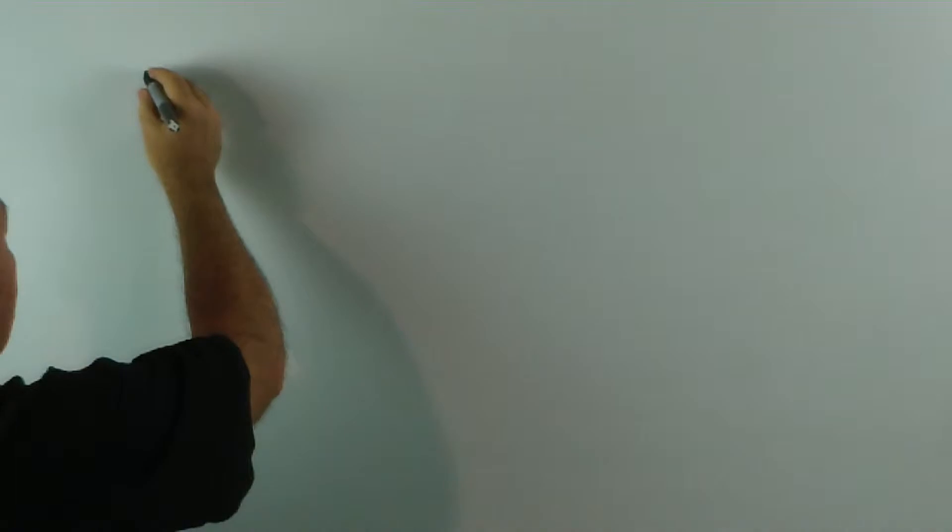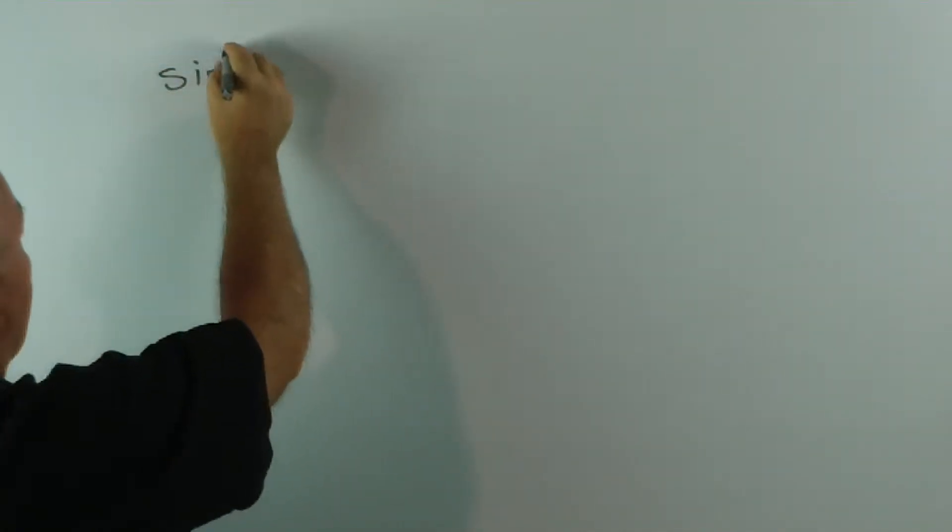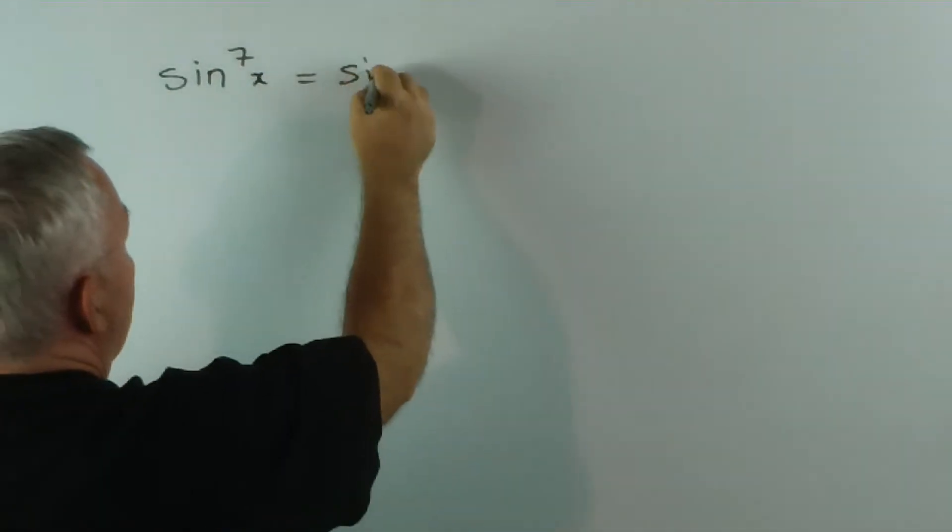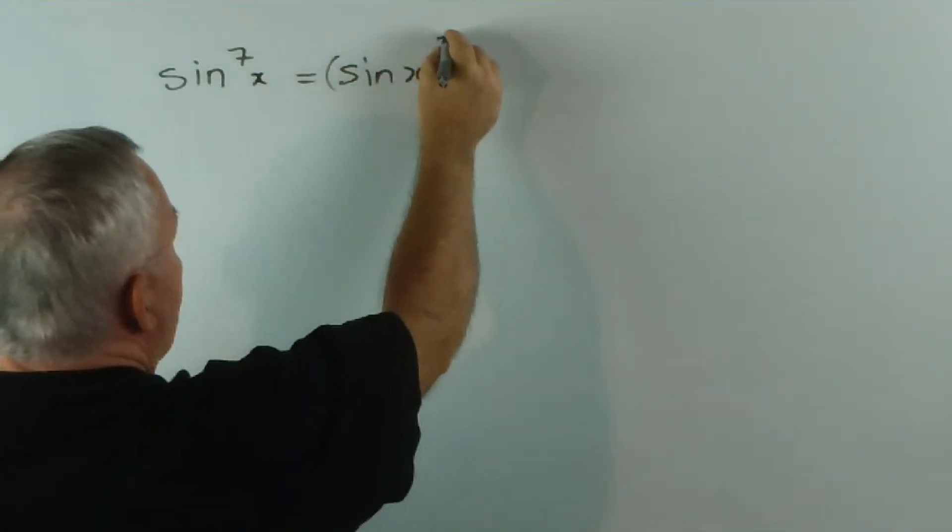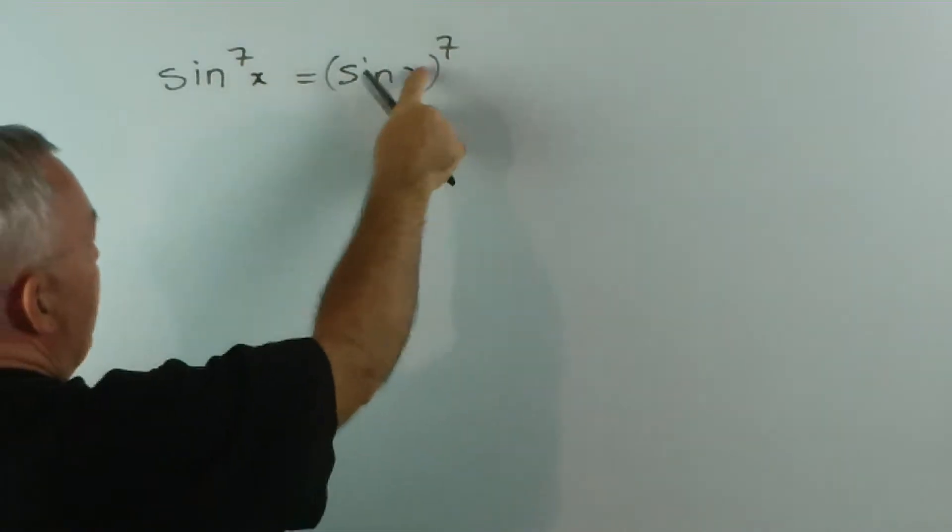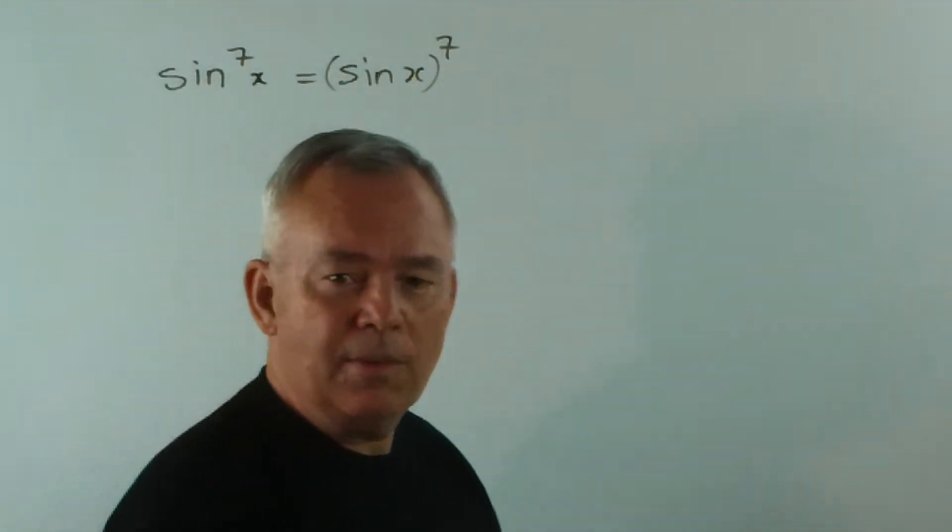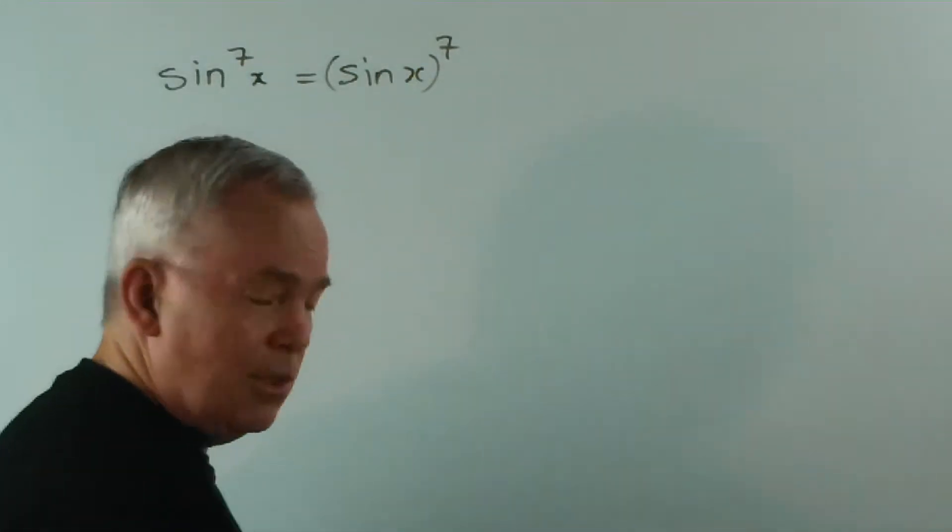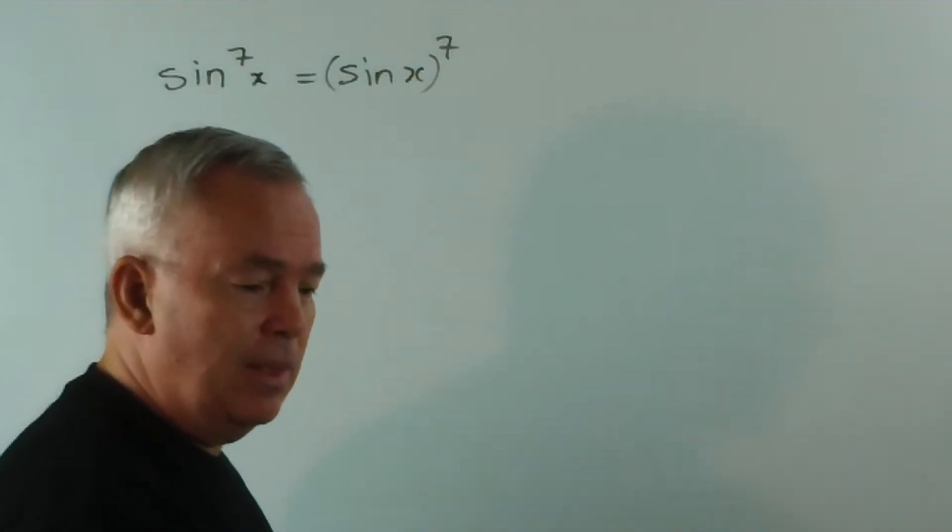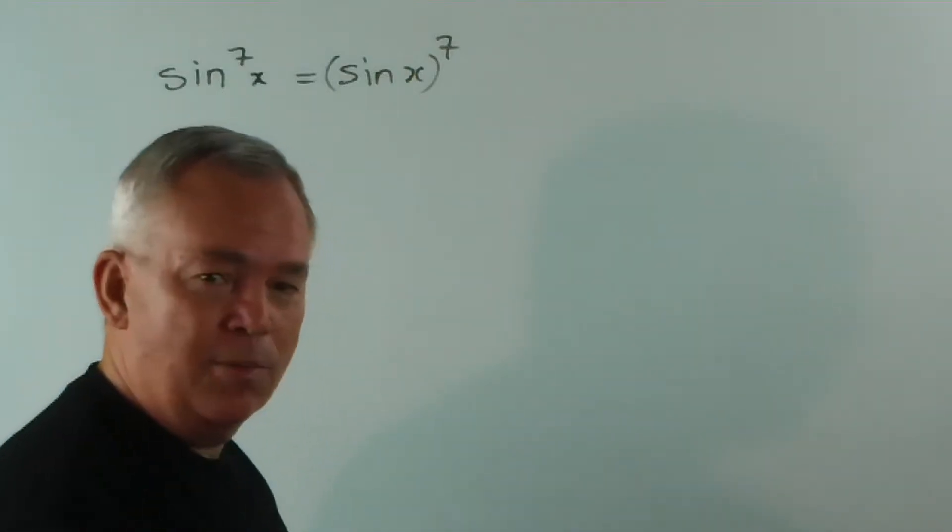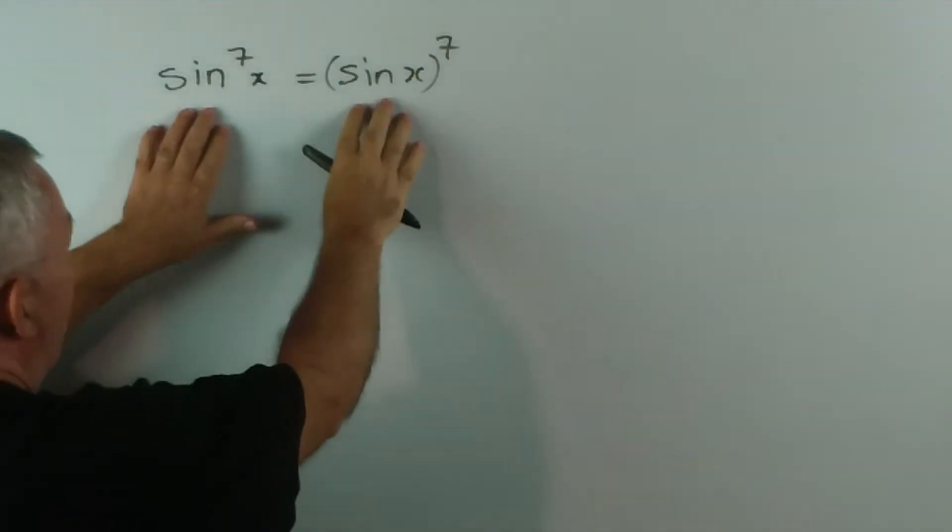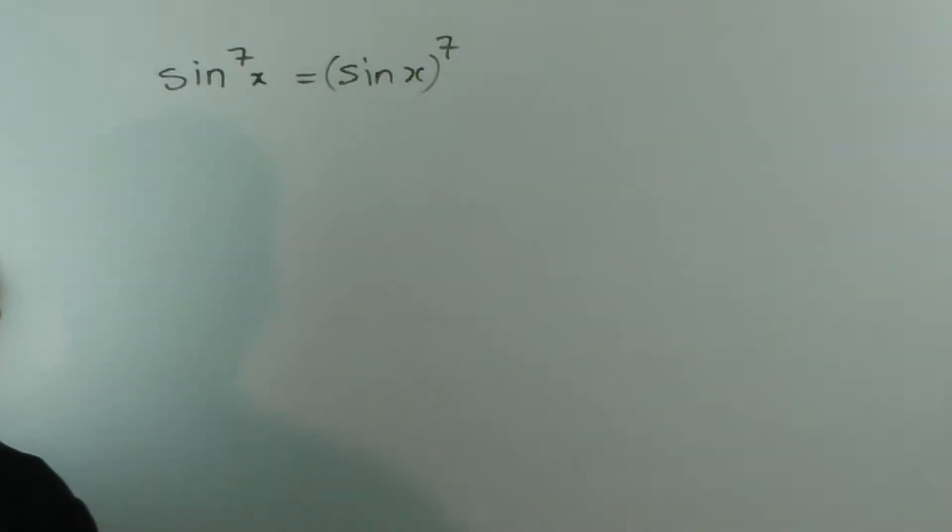The first thing to realize is this. When we write, for example, sine to the power of seven x, we mean sine x to the power of seven. This is a particular terminology we use just to express a power. Certainly in Australia it is. I realize there are some differing terminologies around the world, but this is what we use.